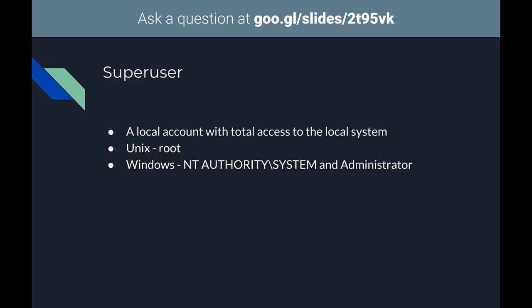Windows splits these into two categories. The NT AUTHORITY\SYSTEM account on Windows functions as a service daemon account — any critical OS service runs as SYSTEM. Administrator is the account used for daily maintenance. You likely won't interact with SYSTEM as an end user, but it's useful to know: if you're doing legal exploitation on a Windows box and get a process to run as a startup service, those often run as SYSTEM and have comparable file system access to Administrator.